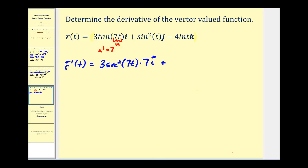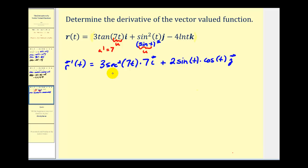For the next component, it's helpful to think of this as sine t squared, which requires the chain rule where u equals sine t. The derivative is 2 times sine t to the first power times u prime, and the derivative of sine t is cosine t. Then we have minus 4 times the derivative of natural log t, and the derivative of natural log t is 1 over t.